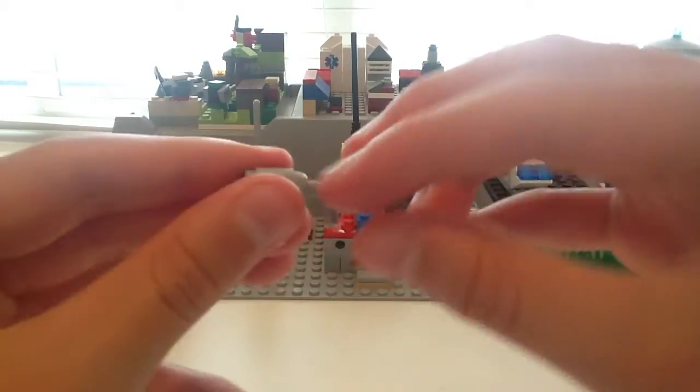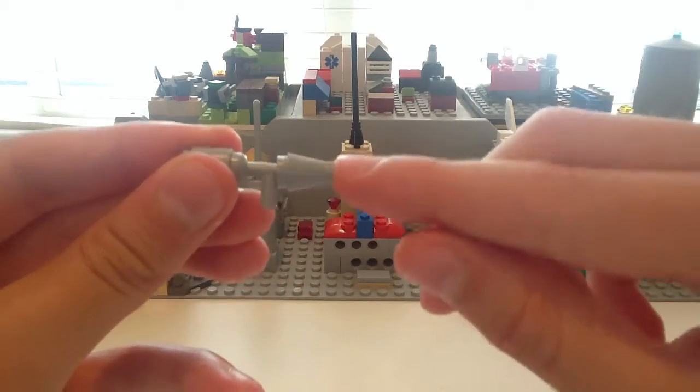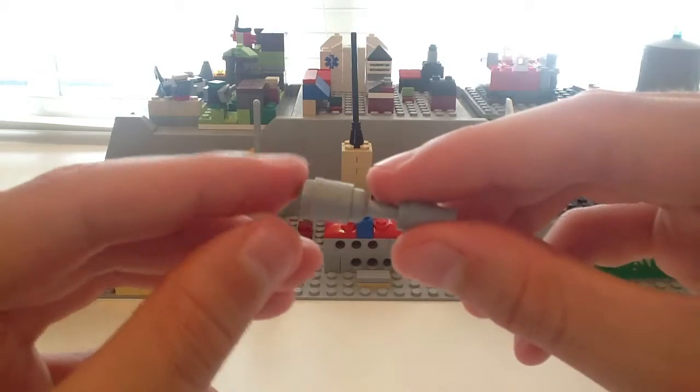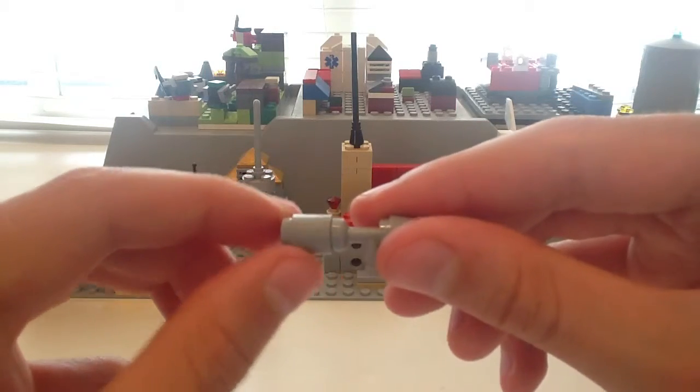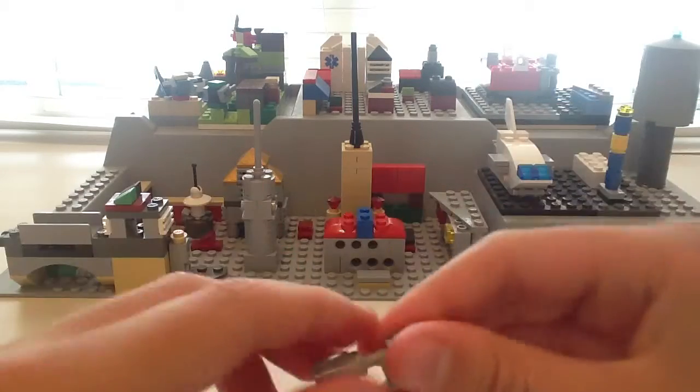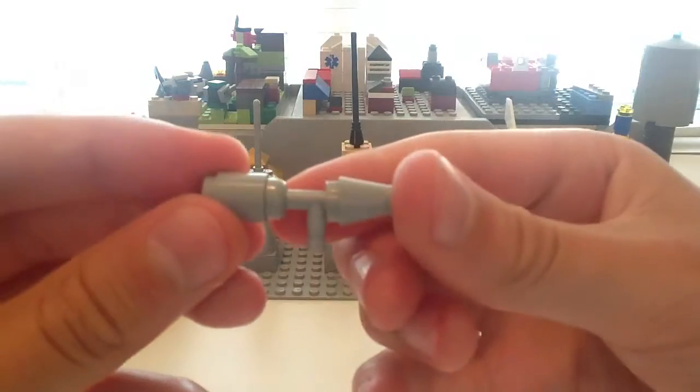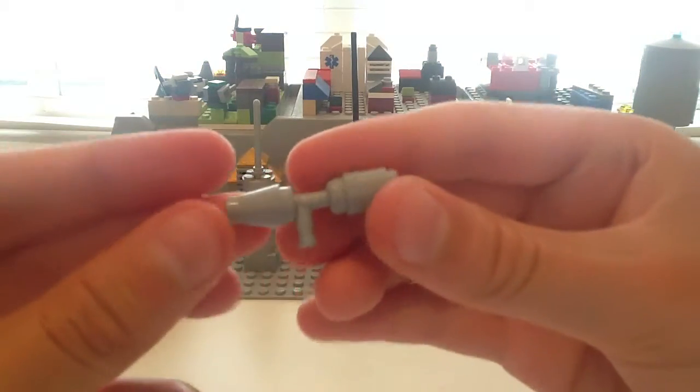So this right here is supposed to be the handle. Here's the front of the gun. And at the back here is supposed to be where the actual little paintballs are stored. So that's it for the first version.